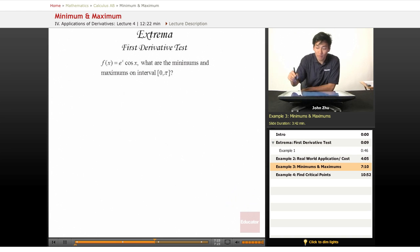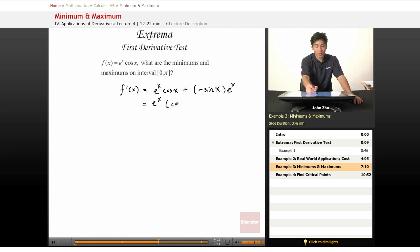We have to take the derivative, so this is probably going to be a product rule. So let's just go ahead and take its derivative. f prime of x equals derivative of the first term, which is e to the x times cosine of x, plus derivative of the second term, negative sine of x times the first term. So if we simplify this a little bit, we get cosine of x minus sine of x.